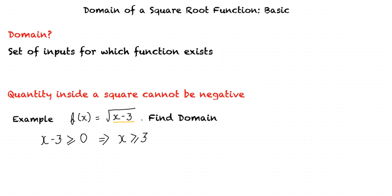The final step is to write the domain of the function using interval notation. X greater than or equal to 3 implies that the variable x in the function f(x) can take any value greater than or equal to 3. Hence we can write the domain as [3, infinity). We use a bracket on the side of 3 because 3 is included in the domain, and a parenthesis on the side of infinity as per convention.